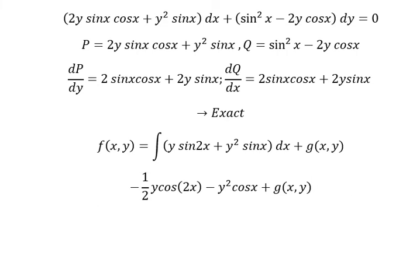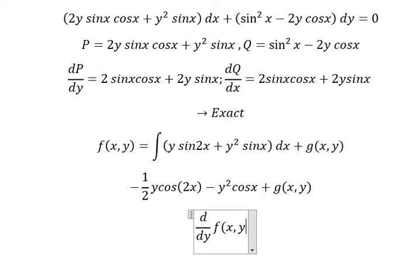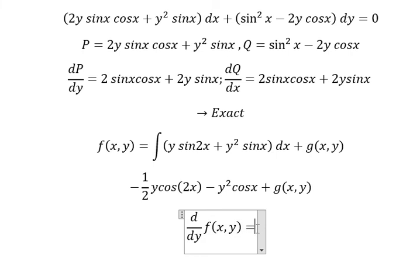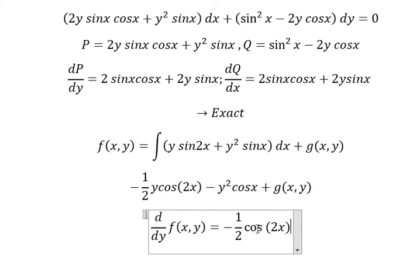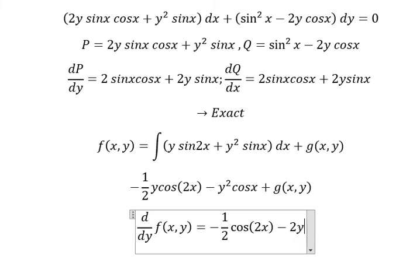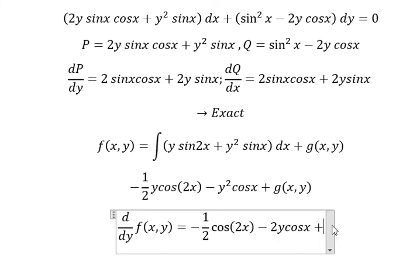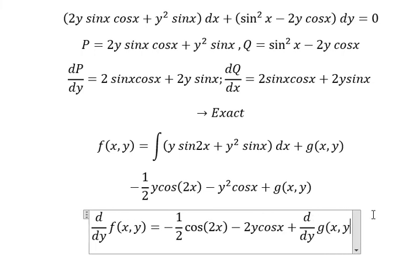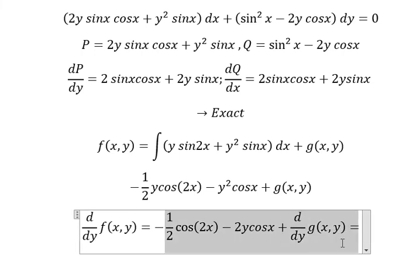Next we need to take the first derivative of the function f(x, y) with respect to y for both sides. We have y in here — first derivative of y gives 1. And we have cos 2x. First derivative of y squared gives 2y cos x. We know that everything here equals Q.